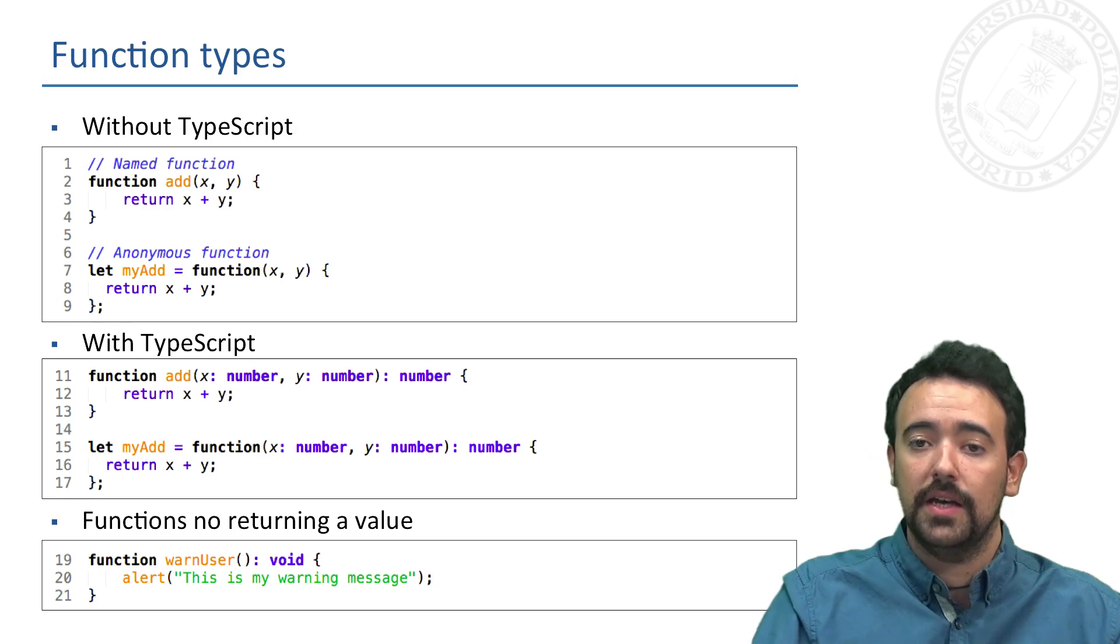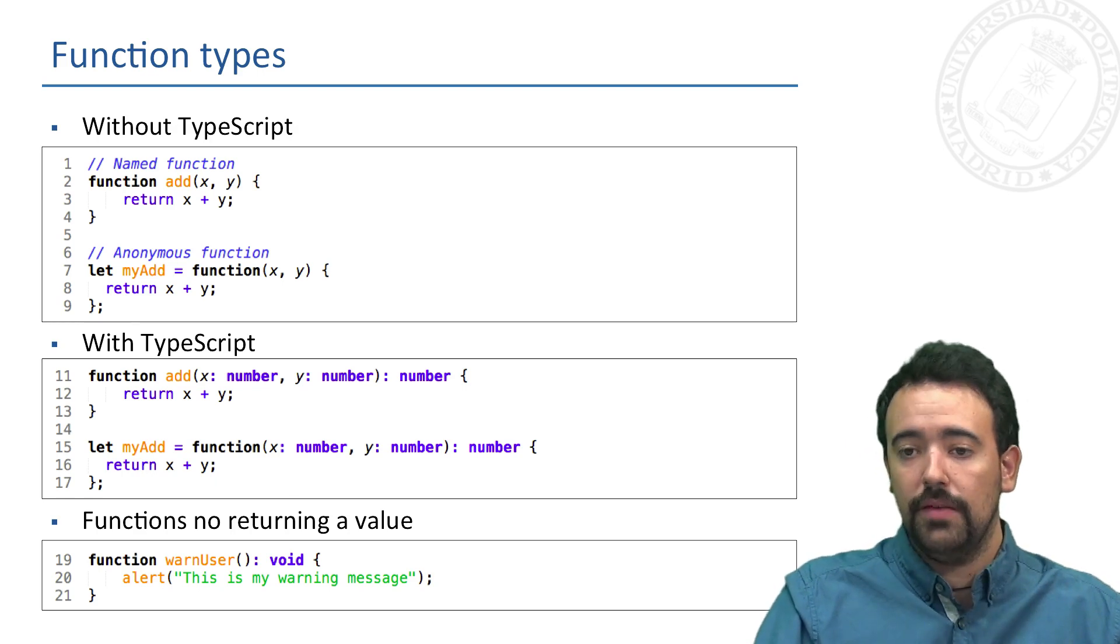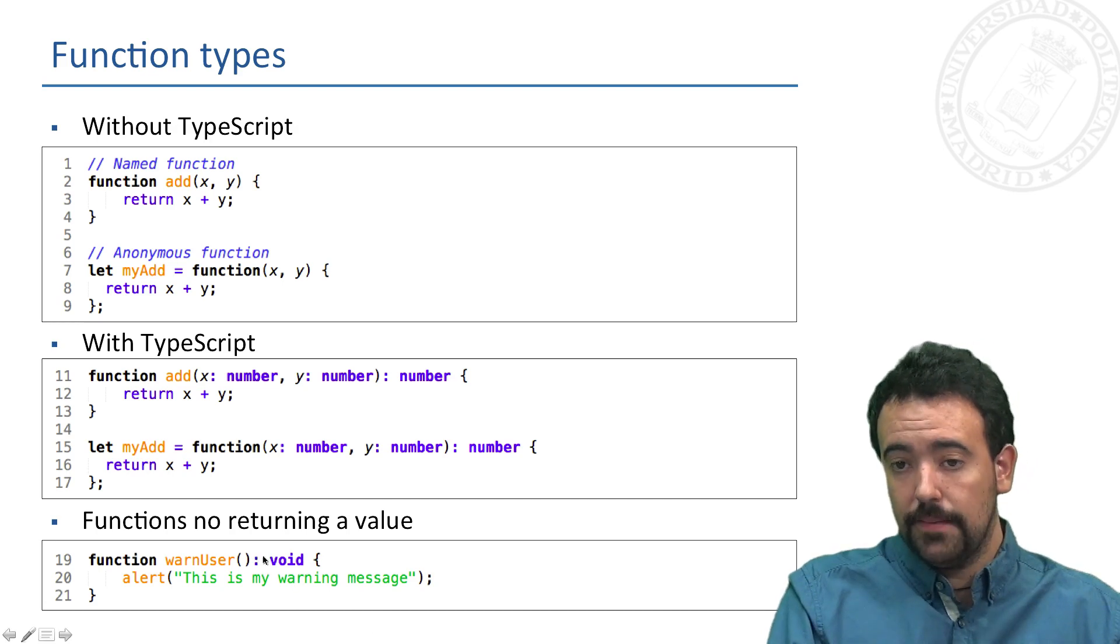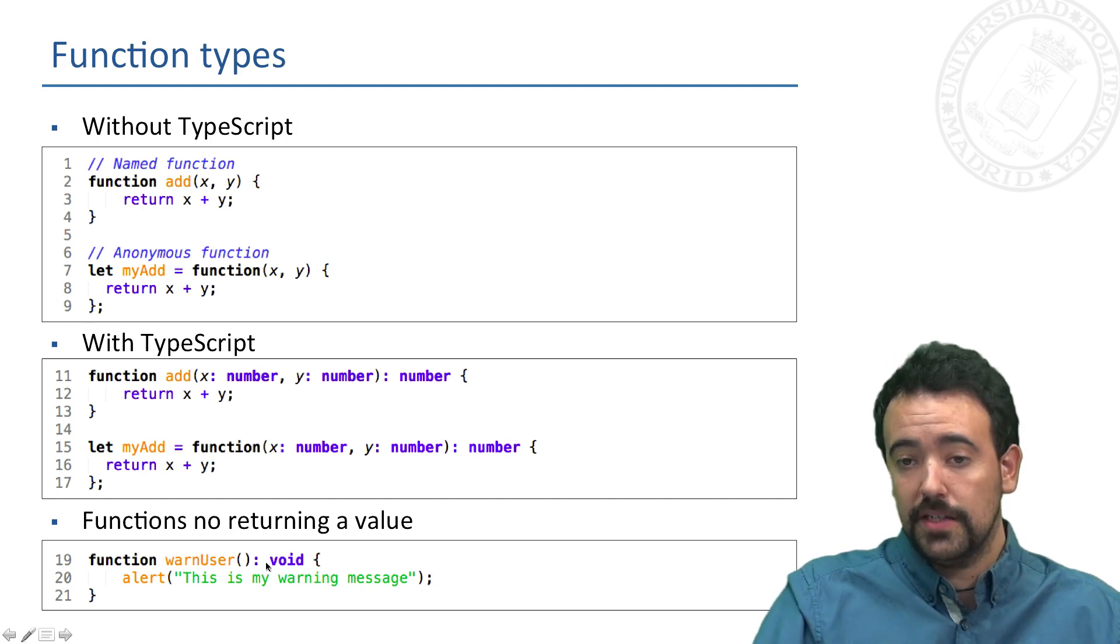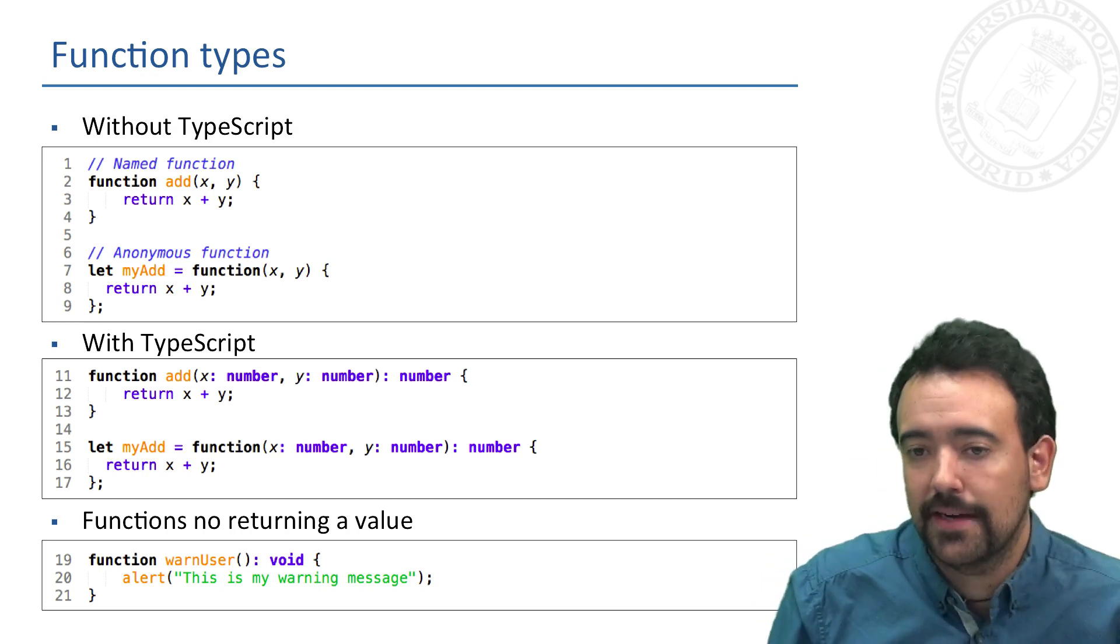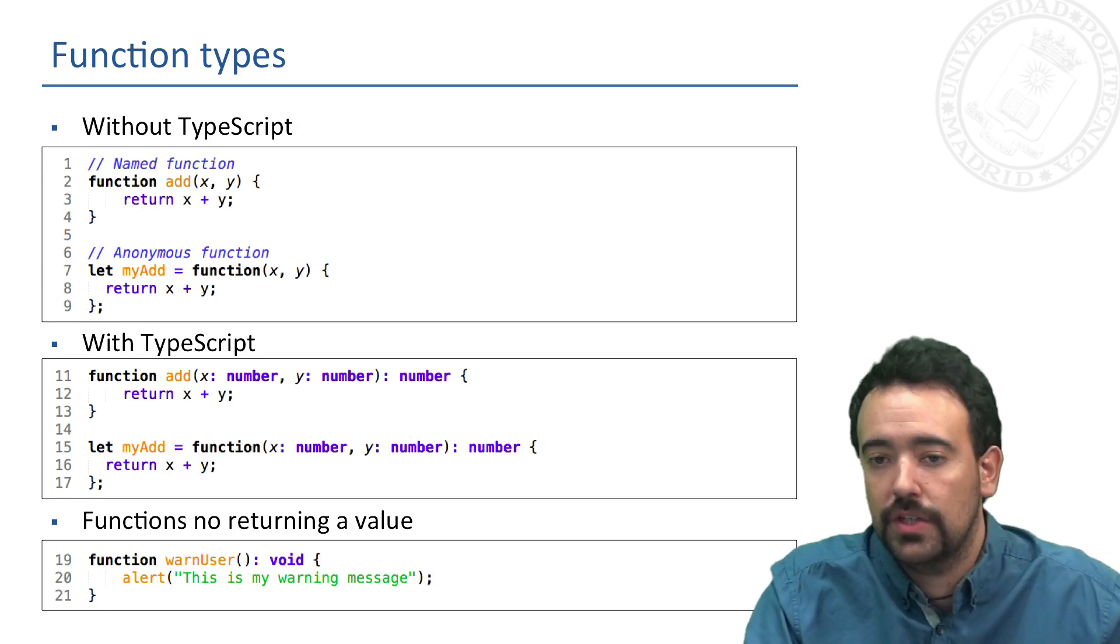If we have a function that does not return any value, we can use the 'void' reserved word to set that this function just alerts to the user and does not return anything.